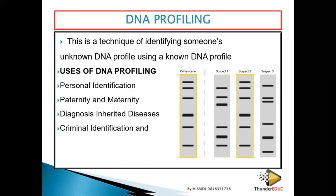Another use is criminal identification — at the crime scene they take samples and compare them to the person they are suspecting, and find the person who committed the crime. Then forensics — even if someone has been in an accident, as long as any remains are found, we can still extract DNA even after 20 years and match it.